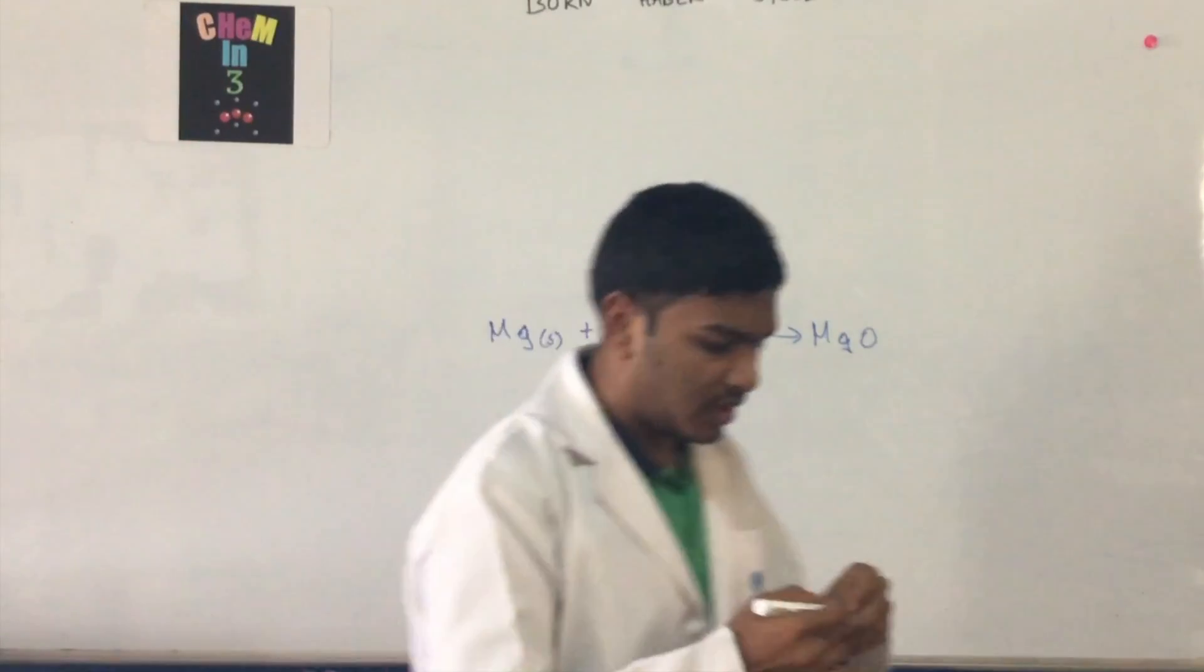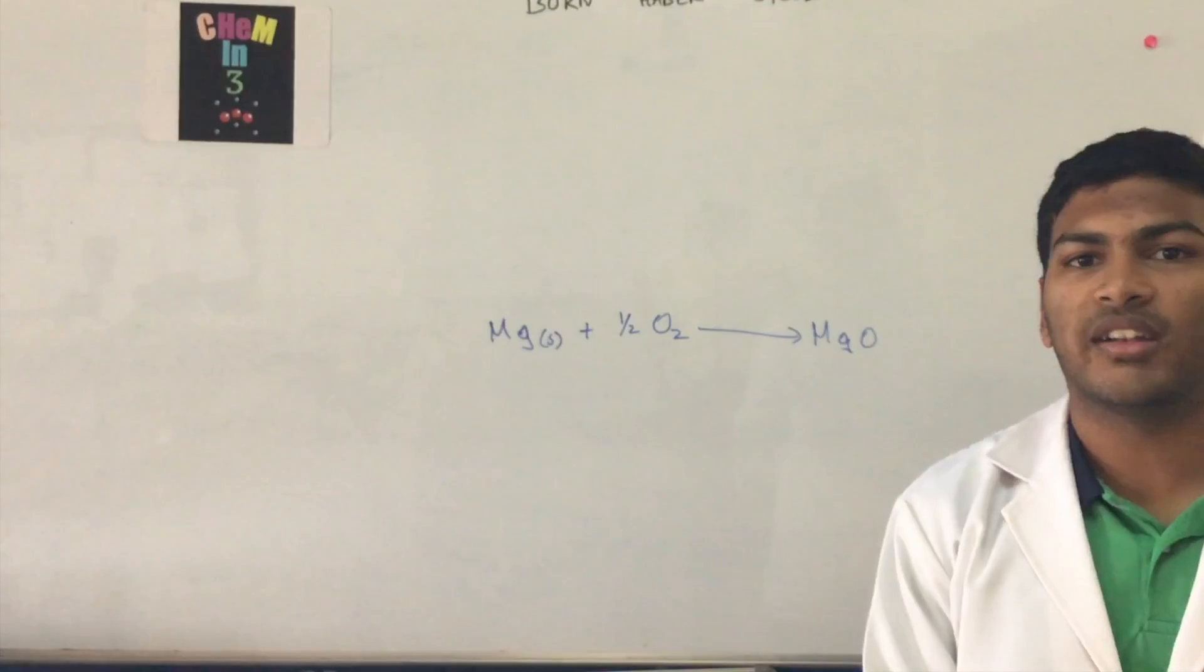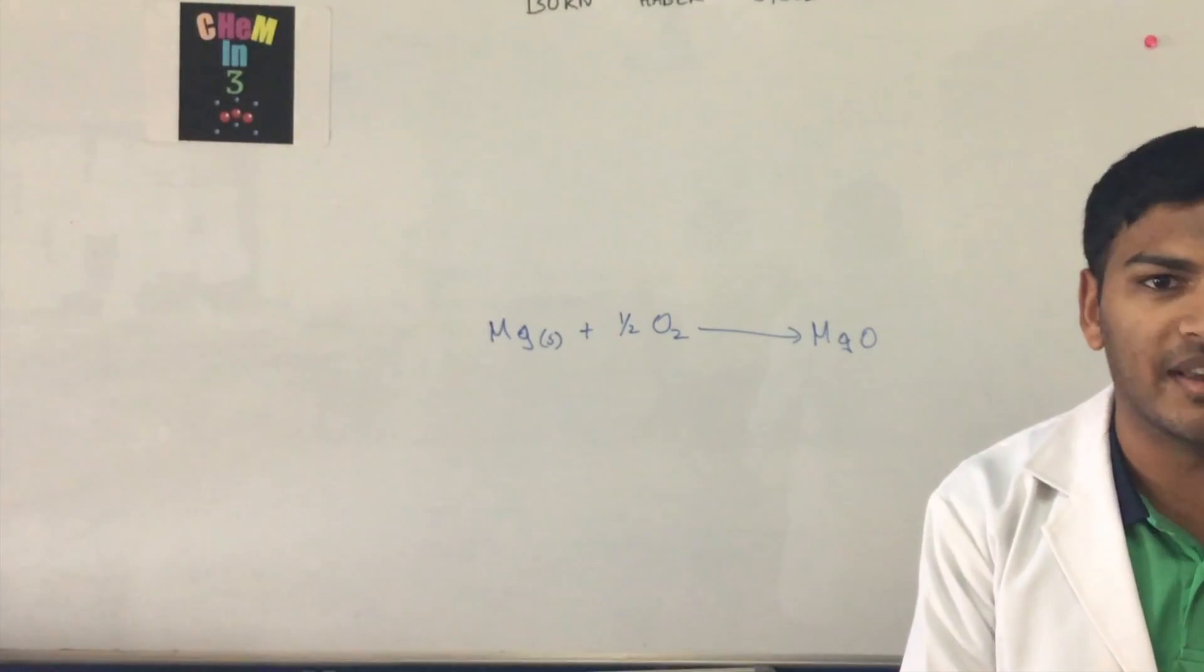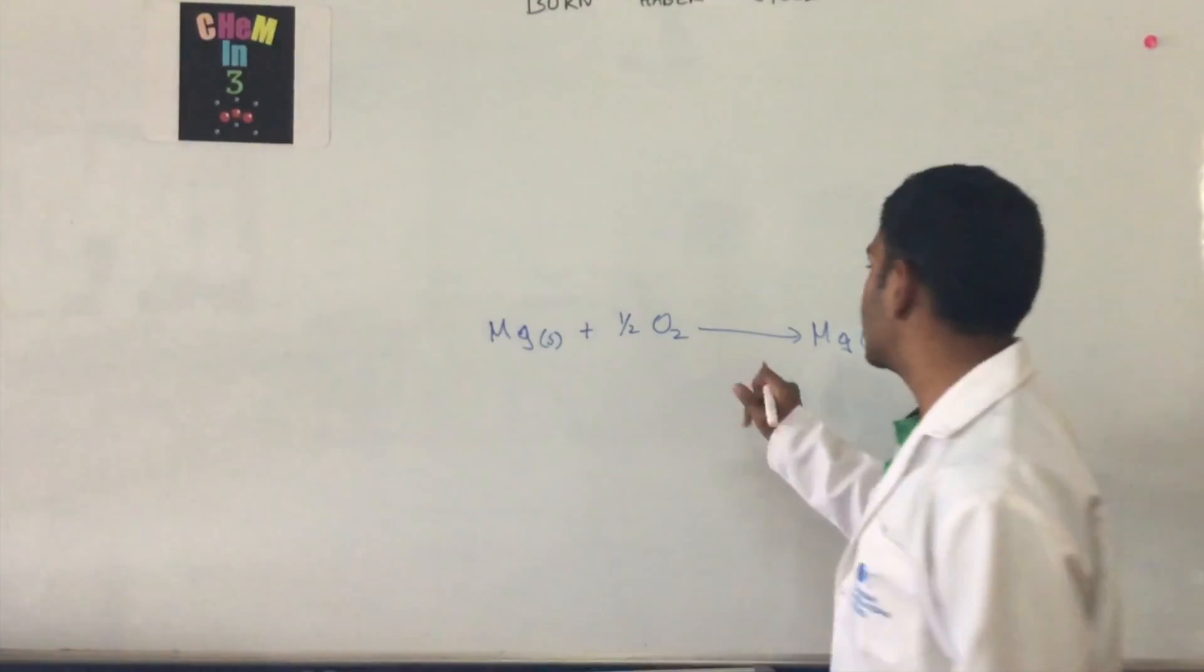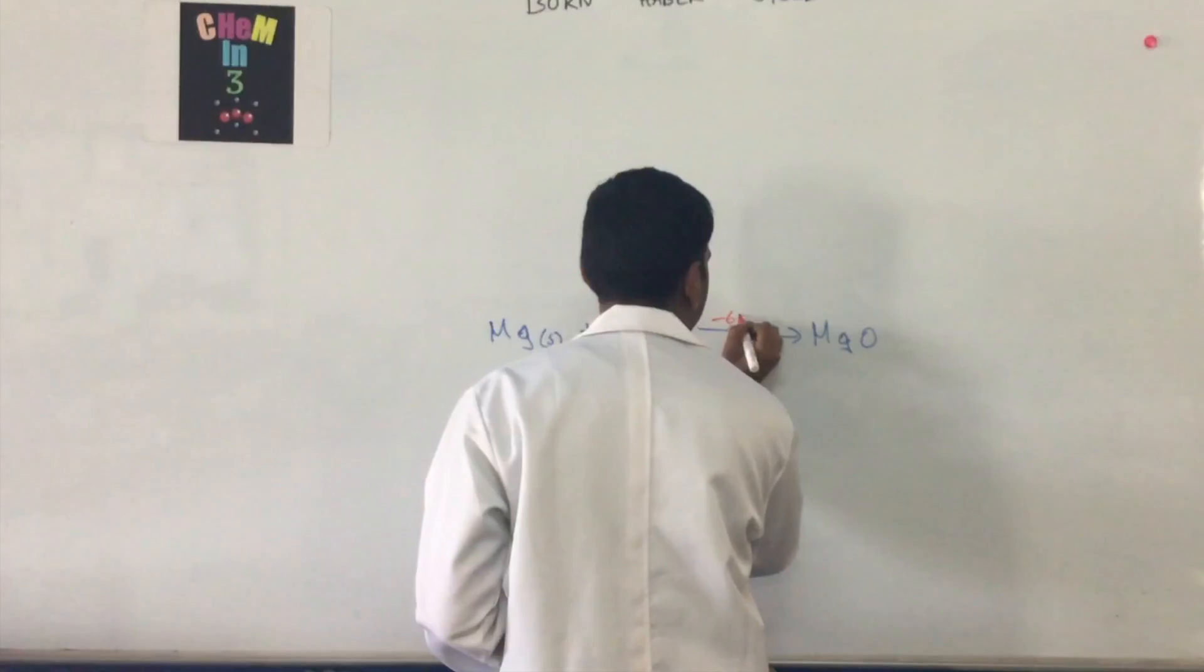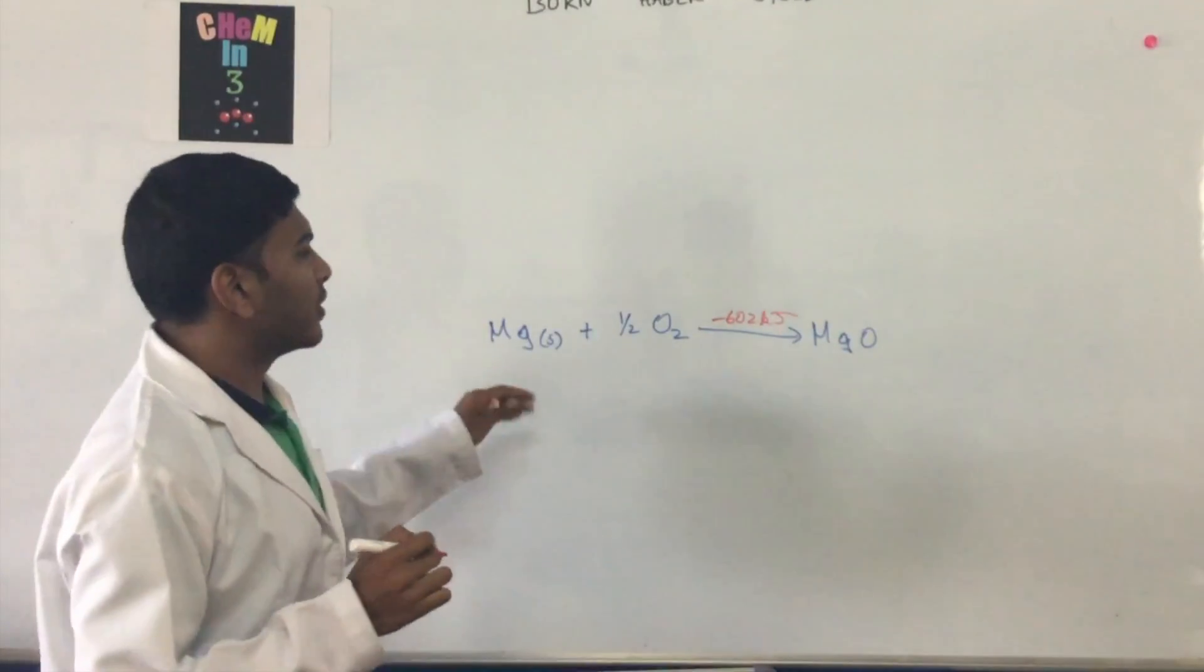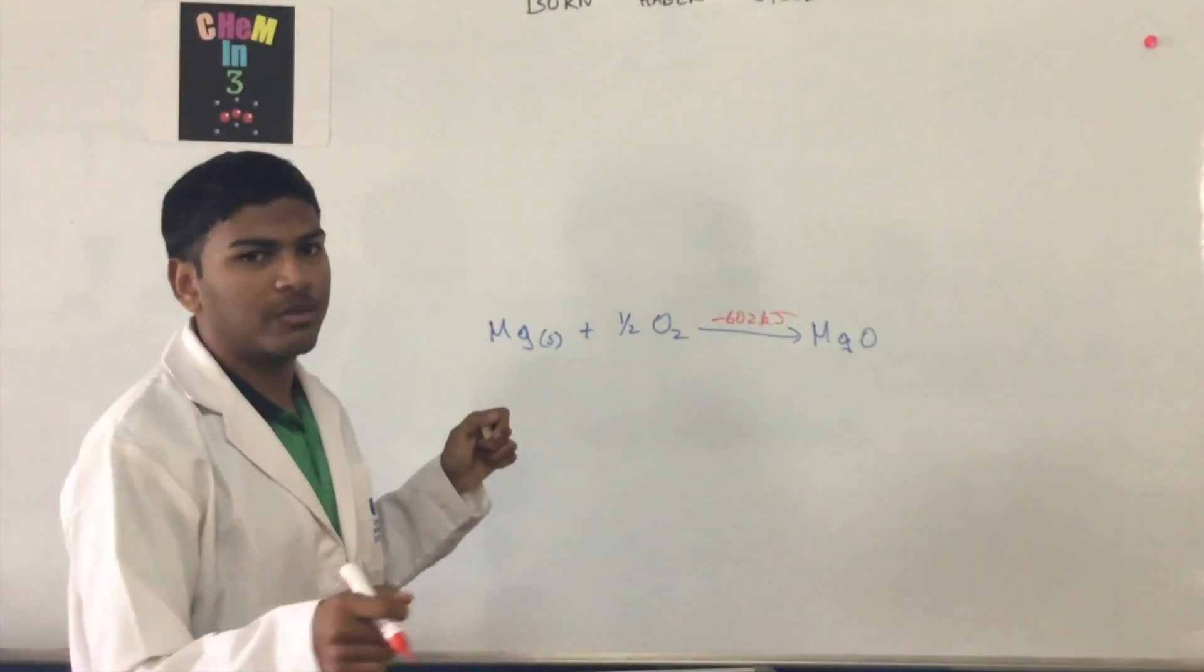So here we have a simple formula for this reaction. But as we're talking about the Born-Haber cycle, it gets fairly complicated from here. Now this heat that is generated is about minus 602 kJ. There is a different cycle that happens unlike what you see.